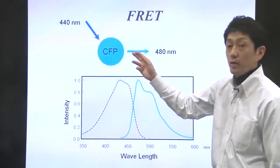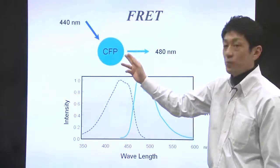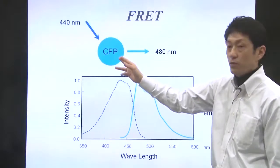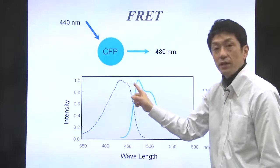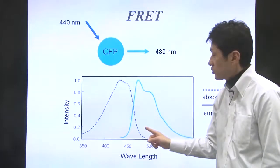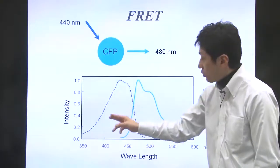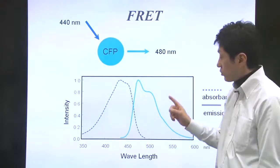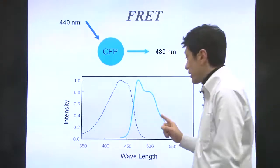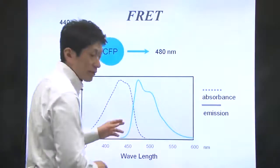What you are looking at here is CFP, cyan fluorescent protein. This dashed line indicates the excitation or absorption spectrum of CFP, and the solid line indicates its emission spectrum.